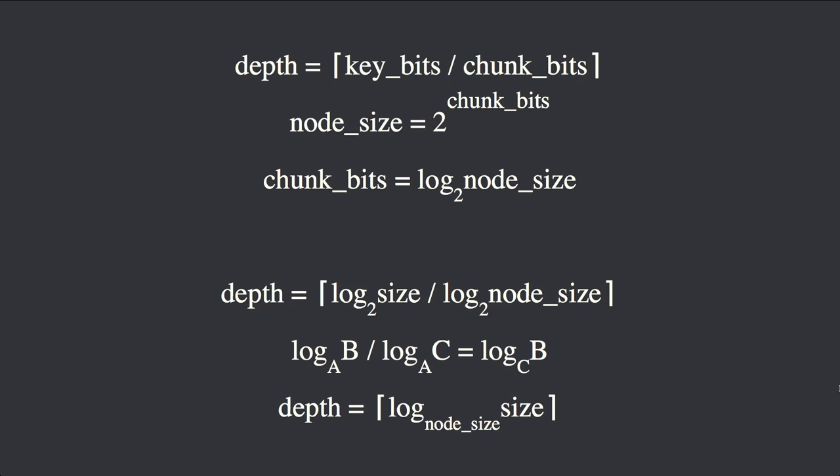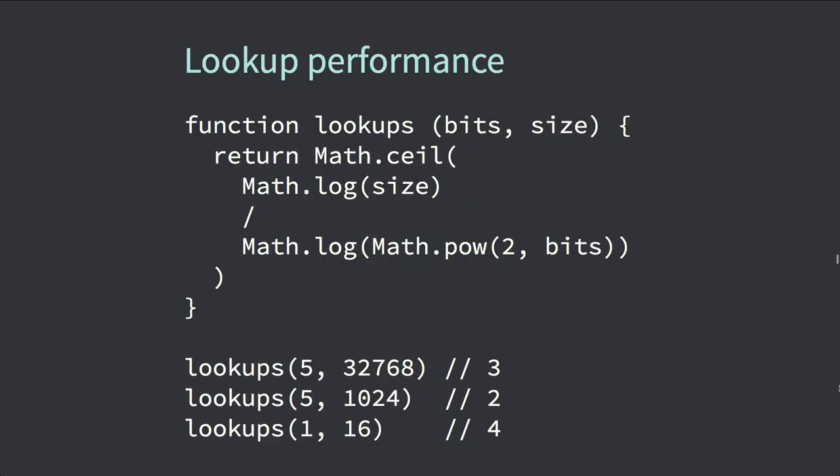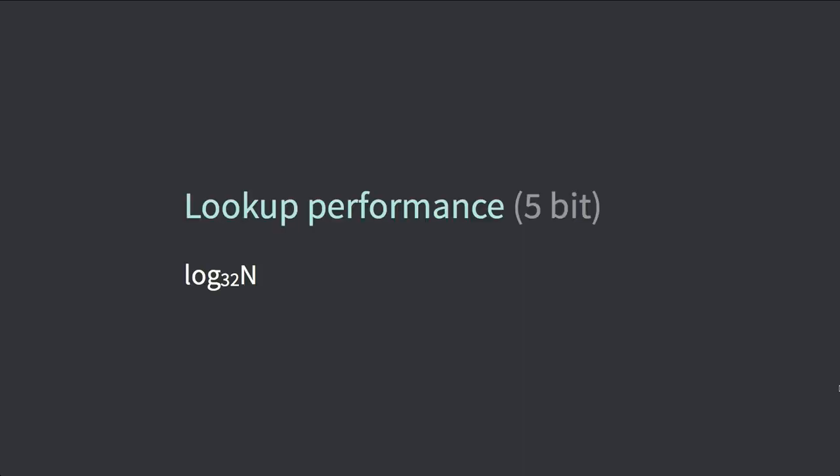This is a bit of math formalizing how we derive the complexity. You can experiment with different configurations using this function — for 5-bit keys and 32,000 elements, you get 3 lookups; for 5-bit keys and 1024 elements, you get 2. For 5-bit chunks, you get log base 32 — and that's what Clojure uses.